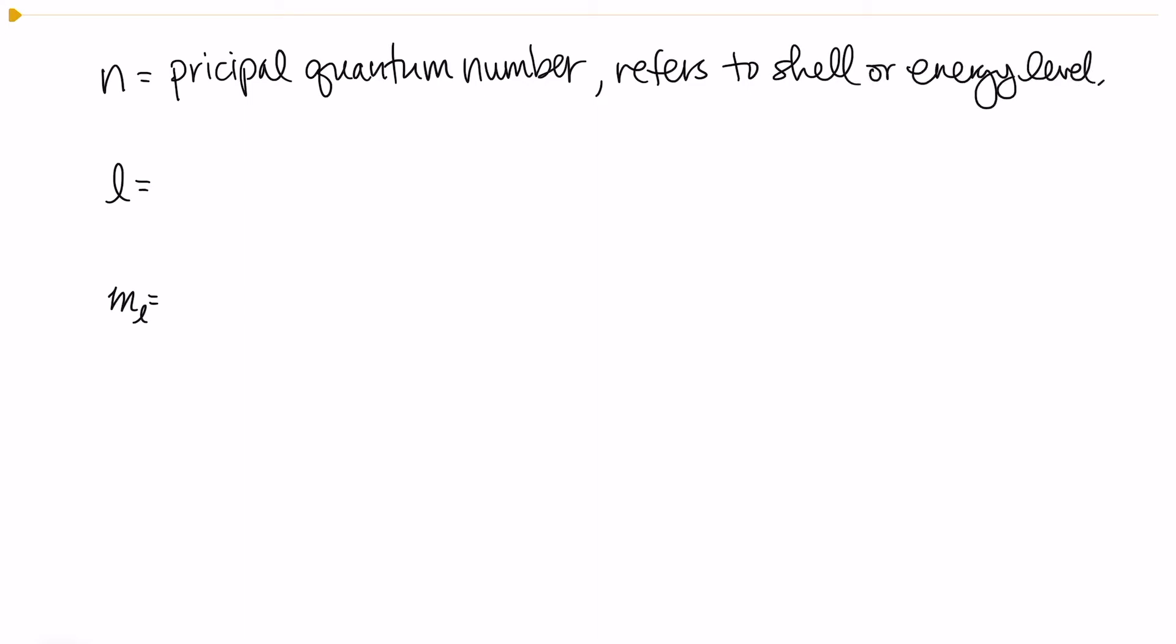Okay, so we're gonna start by talking about the quantum numbers n, l, and m sub l. So n is our principal quantum number and this refers to the shell or energy level and generally indicates size. So if I have a larger n, that means I'm gonna have a larger orbital.